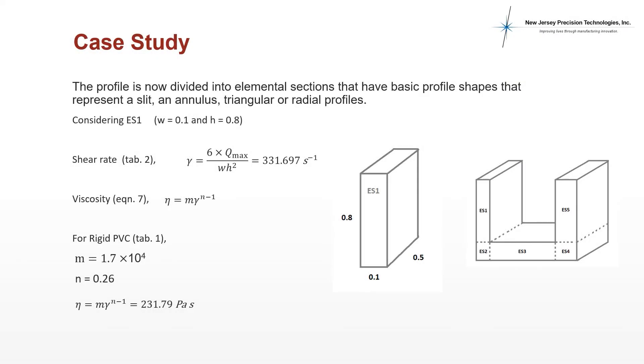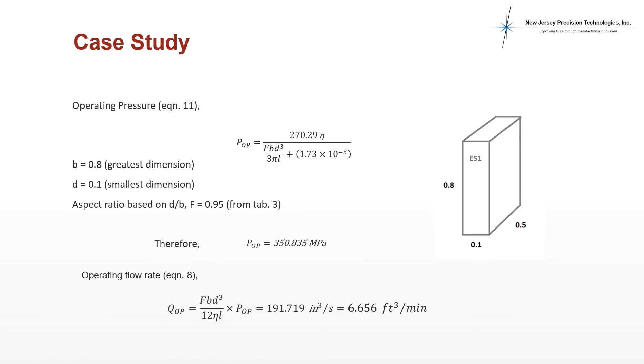Next, we divide the profile into elemental sections that have basic profile shapes representing a slit, an annulus, triangular, or radial profiles. Considering each elemental section individually, we find the shear rate inside the channel and the viscosity of the rigid PVC passing through it. In this case, we considered elemental section 1. Once we have calculated the viscosity of rigid PVC passing through elemental section 1, we can determine the operating inlet pressure through the elemental section 1 channel.